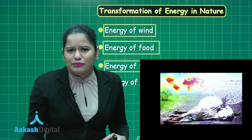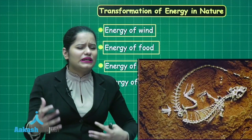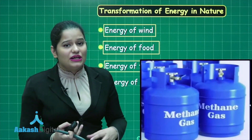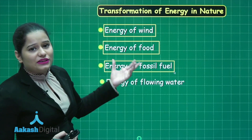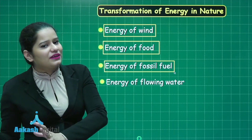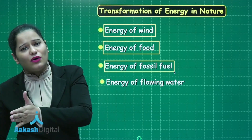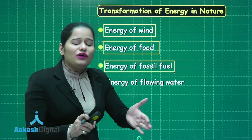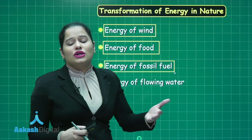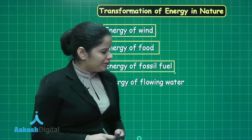Moving on to the energy of fossil fuels. The bodies of animals and plants, after their death, got buried deep under the Earth's crust for millions and millions of years, and that created fossil fuels like coal, petroleum, and natural gas. So solar energy is responsible for the stored energy in plants and animals, and when they get buried deep under the Earth's crust for millions of years, fossil fuels are formed. Fossil fuels are then used to generate heat energy, electricity, and various other forms of energy.